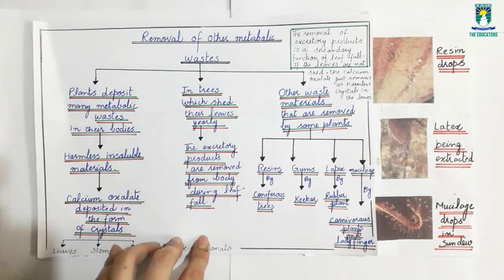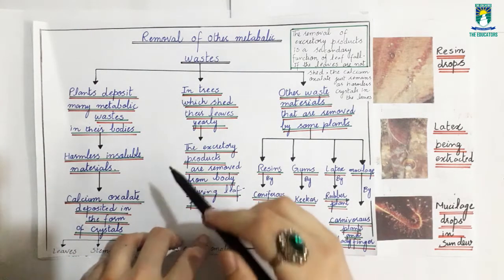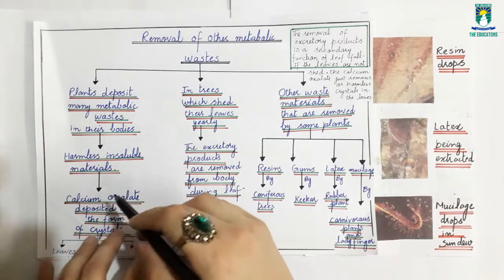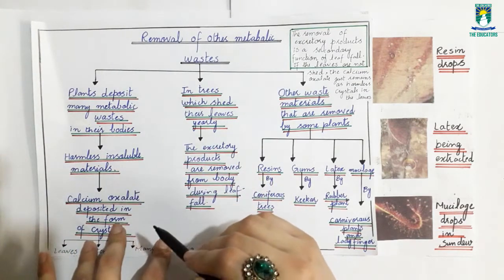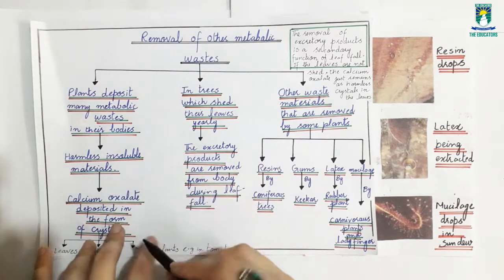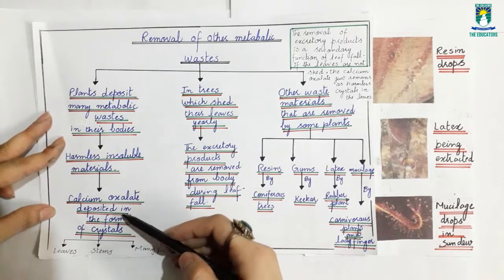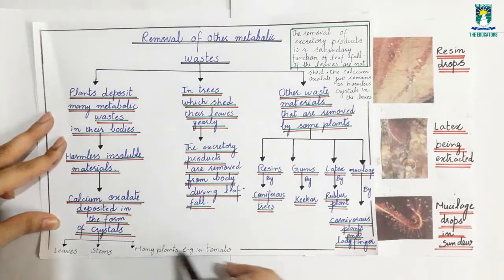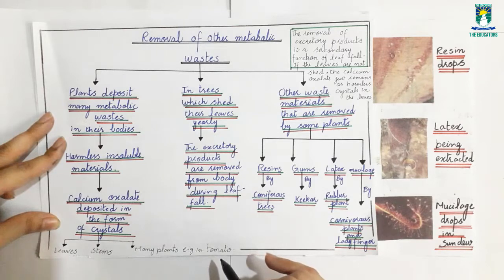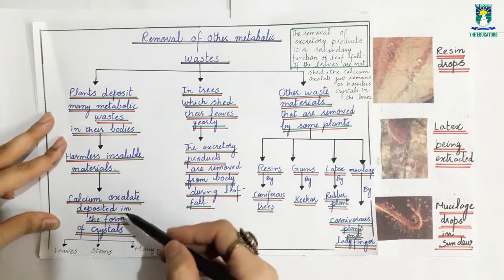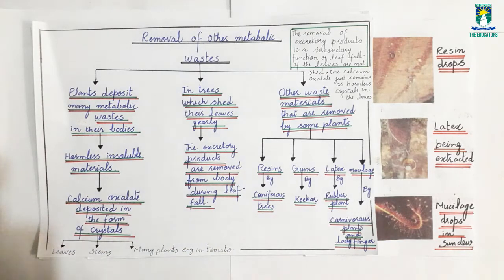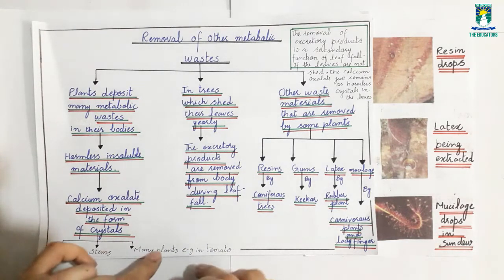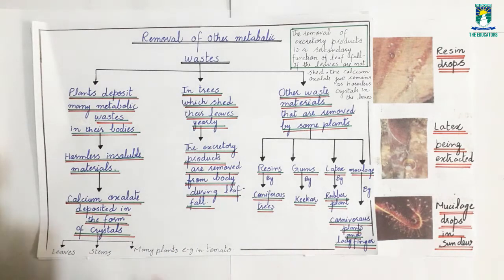In plants, metabolic waste is deposited in their bodies in the form of harmless insoluble materials. For example, calcium oxalate is a metabolic waste stored in leaves and stems as crystals. It is stored in plants like the tomato plant, where calcium oxalate crystals are deposited as harmless material and do not damage the plant.